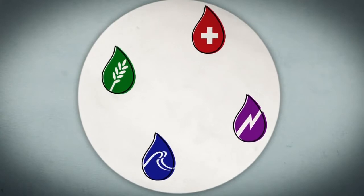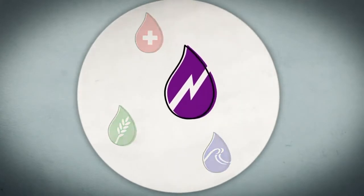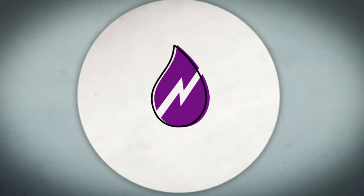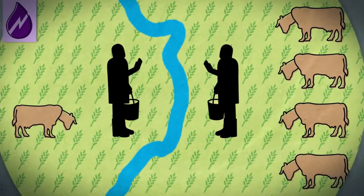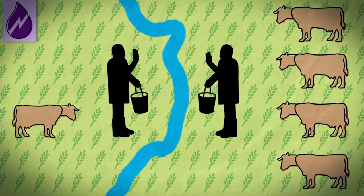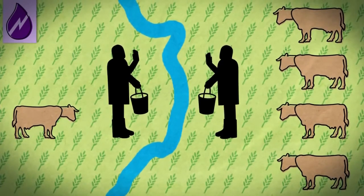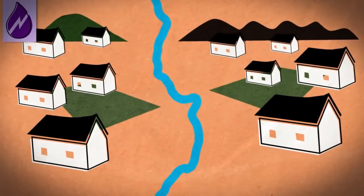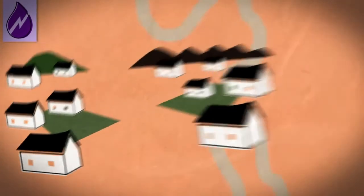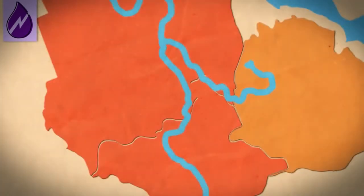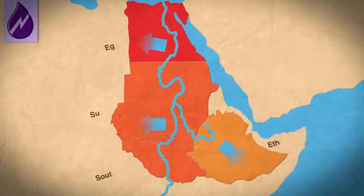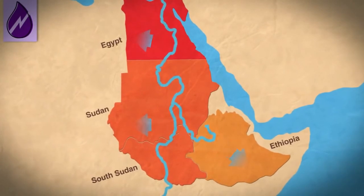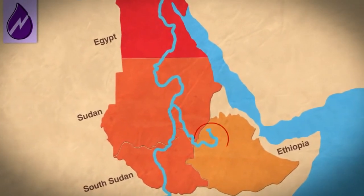Third, in regions where water is a scarce resource, it can lead to conflicts. Struggles over water resources can arise between villages and regions, between landowners and peasants, or even between different states. An example is the conflict over the use of the Nile, one of the largest rivers in the world.